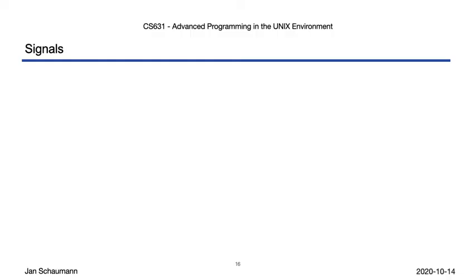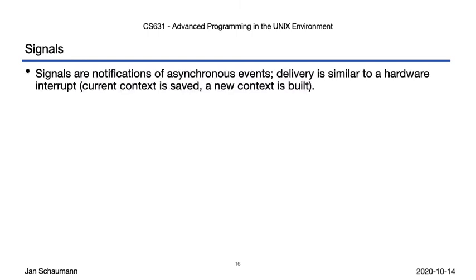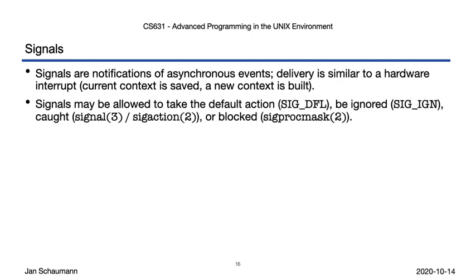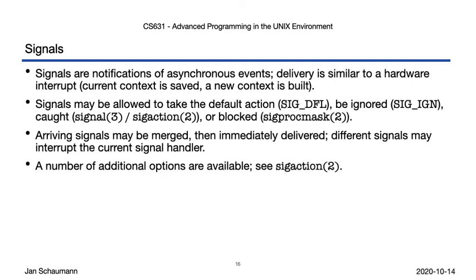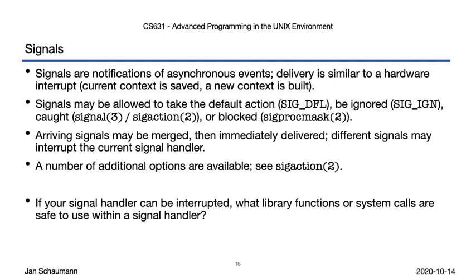Make sure to replay the code examples yourself and read the comments, but for now, let's recap real quick. Signals are asynchronous and unpredictable — they may be delivered at any time, whenever. We can allow the default action to take place, to ignore the signal, to install a signal handler, or to block the signal. We saw that multiple arriving signals may be merged, but also that our signal handler itself can be interrupted by another signal. But what kind of stuff can we do inside the signal handler? If we can be interrupted there, we probably have to be quite careful about what we can and can't do. We will discuss that in our next video.